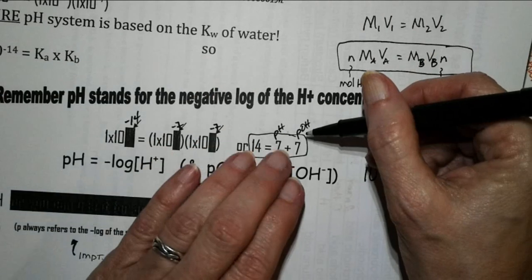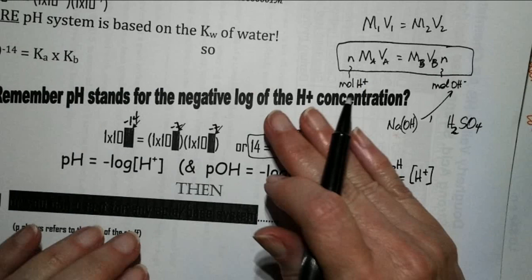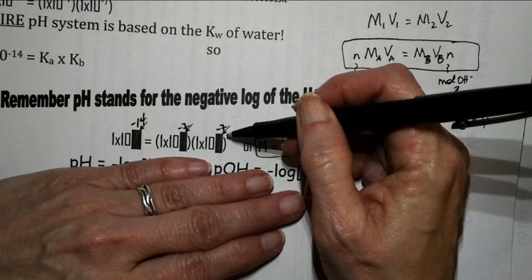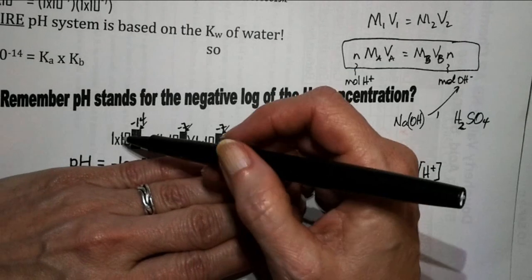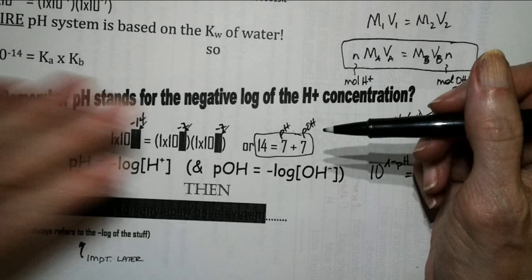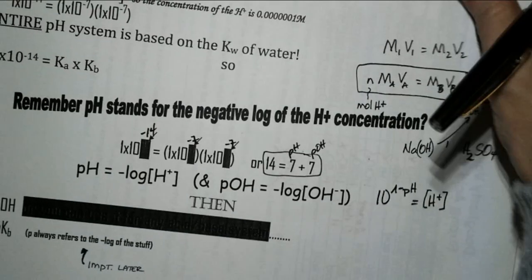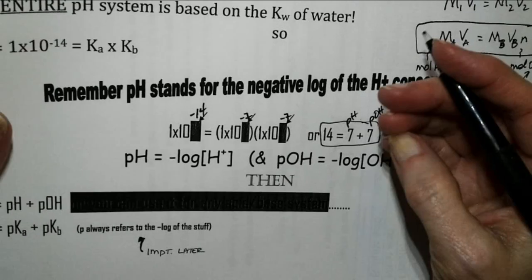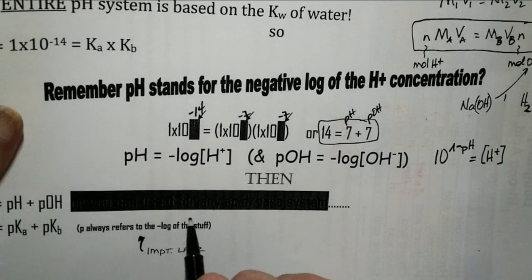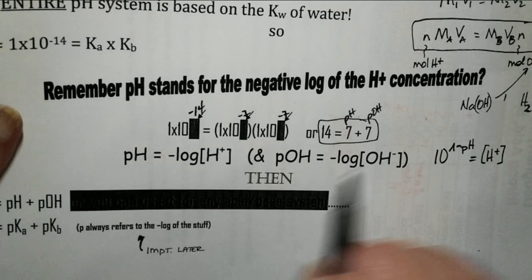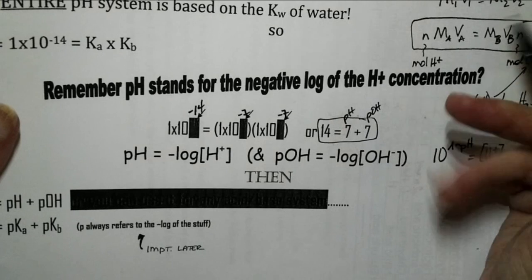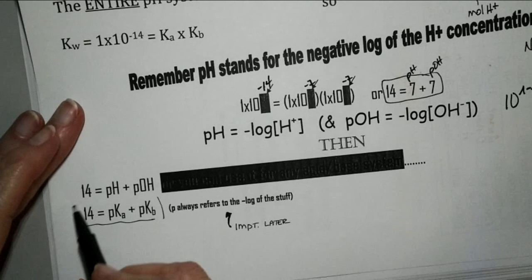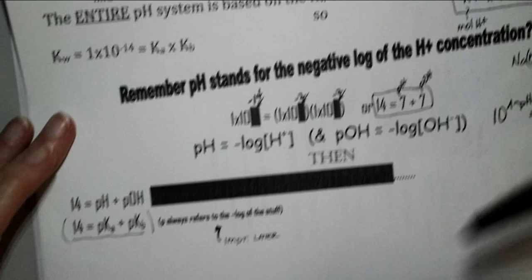If you don't have it in negative log form, then when you multiply the hydrogen ion concentration by the hydroxide ion concentration, they will always equal 1×10⁻¹⁴ — that's the constant. The highlighted section reads: 14 equals pH plus pOH, or you can use it for any acid-base system. This next part we'll hold for later when we talk about pKa and pKb.